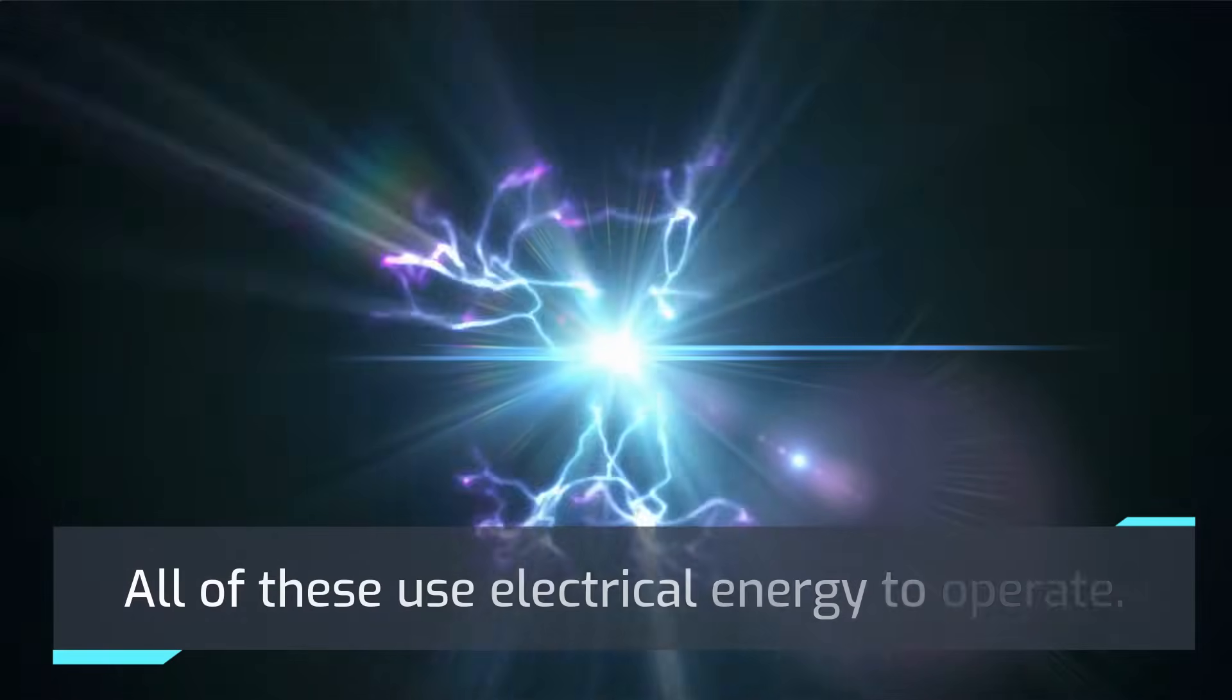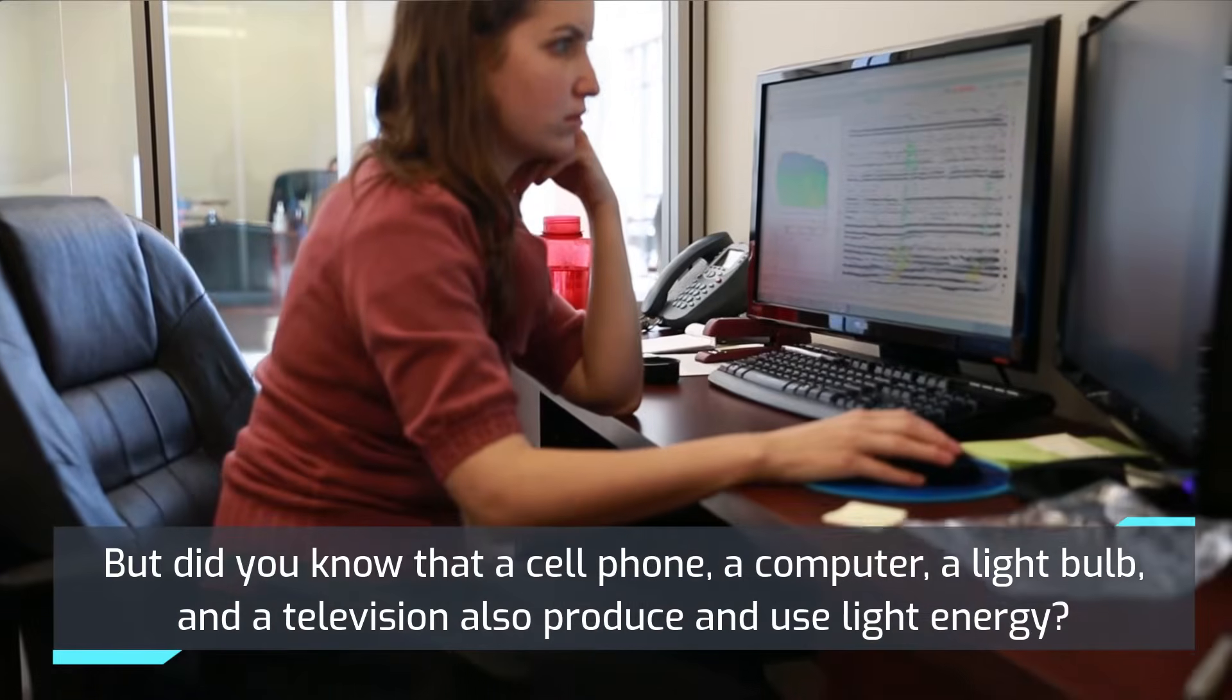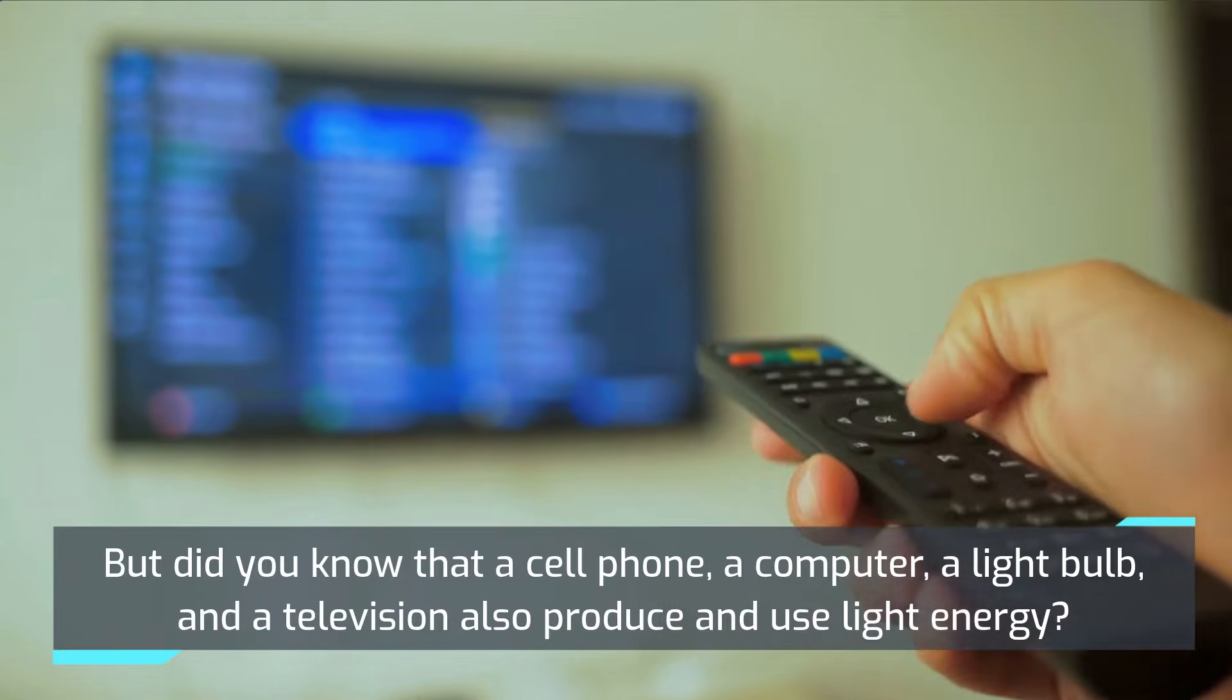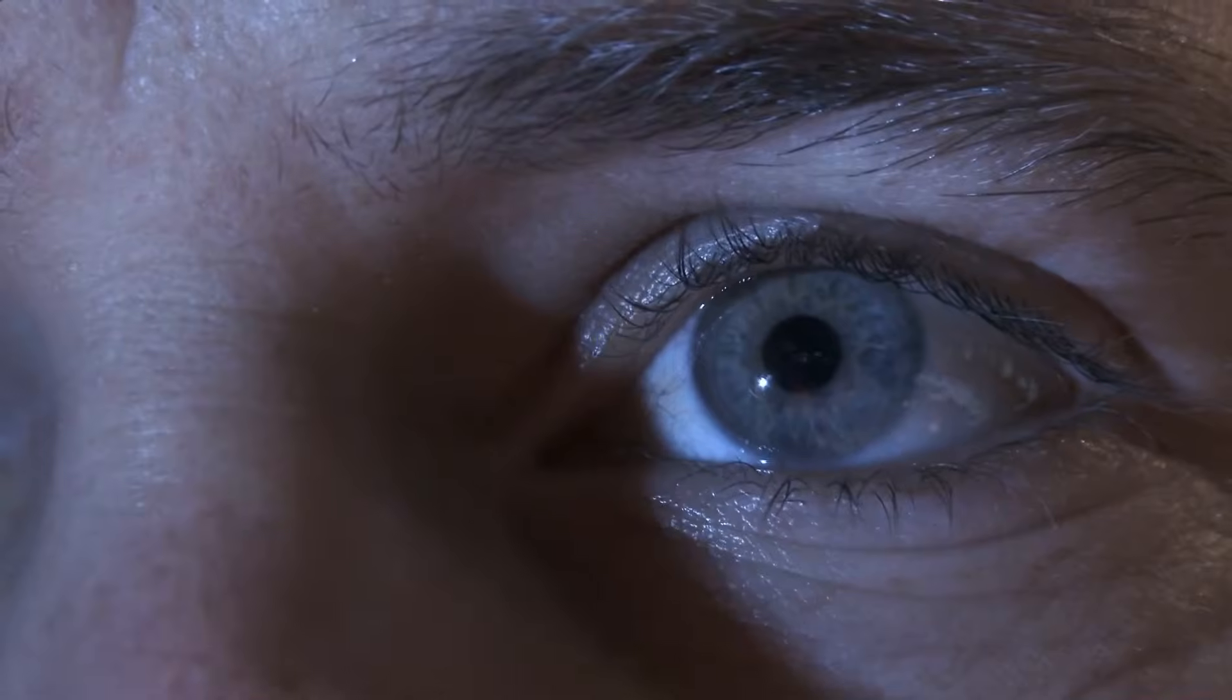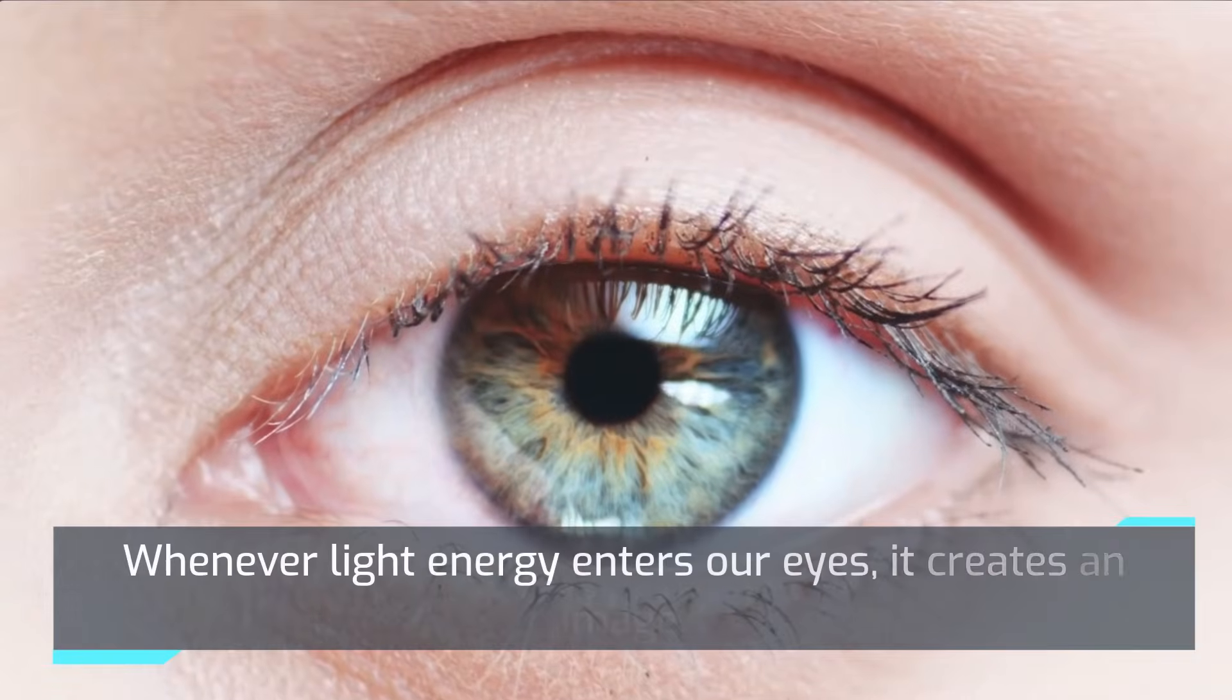But did you know that a cell phone, a computer, a light bulb, and a television also produce and use light energy? Light energy is electromagnetic energy that can be sensed by our eyes. Whenever light energy enters our eyes, it creates an image we call this a sense of sight.